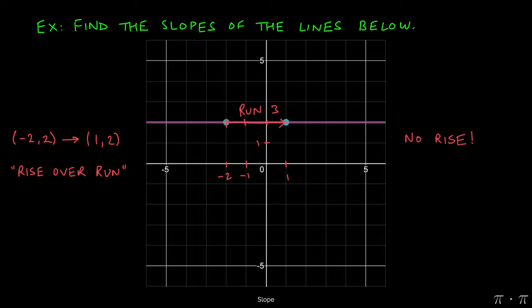So again, there is no rise. There's only a run of three units. So the slope, which is given by rise over run, is simply zero, because again, there is no rise over three. Zero over three is simply zero.